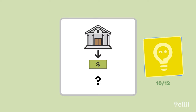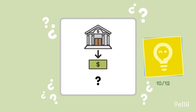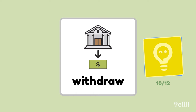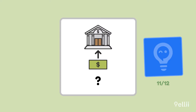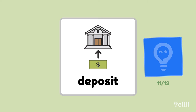There are two really common actions you can do at a bank with an ATM or a teller. When you want to take money out of your account, what is this action called? Withdraw. Add AL to the end of the verb to make the noun withdrawal. And when you want to put money into your account, what's the name of this action? Deposit. The word deposit can be both a verb and a noun.